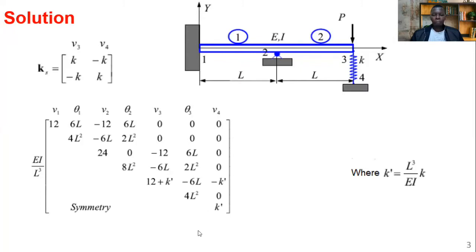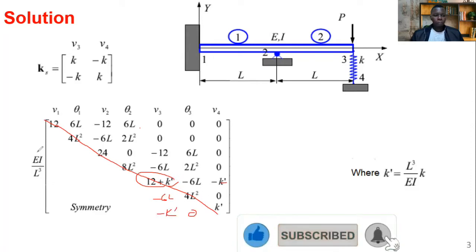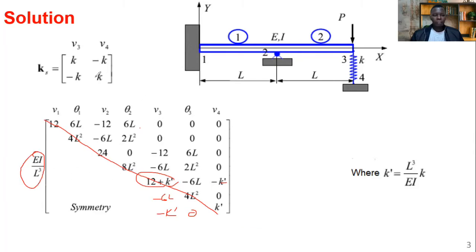We now add the spring to the global beam stiffness matrix. Where v3 appears, we add k and minus k from the spring. The matrix is symmetric. We define a new quantity k-prime as the reciprocal of EI/L³ so that it cancels with the beam stiffness scaling factor, simplifying the arithmetic. We add the spring components at the v3 position and introduce v4, giving the complete global stiffness matrix.